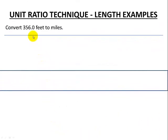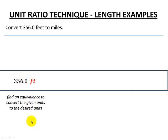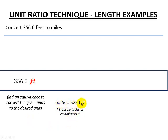Let's try another example — converting feet to miles. Start with the given measurement in units, so there's our 356.0 feet. Next, find an equivalence to convert our given units to our desired units. When we look up our tables of equivalences we see an equivalence between miles and feet. Now we have to decide whether feet go on the top or the bottom. Since they are part of our original units, we'll put them on the bottom so that the feet will cancel out.